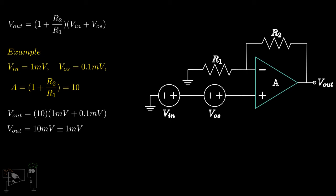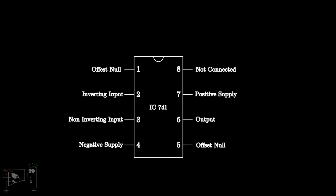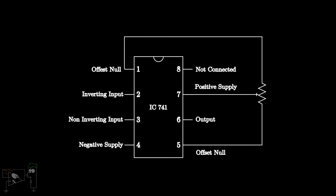The second thing we can do is use DC offset nulling circuits. If you look at the IC741 pin diagram, you can notice two pins labeled as offset null. We can nullify the effect of the input offset voltage by applying a potentiometer between these terminals and adjusting its value till we get zero output.